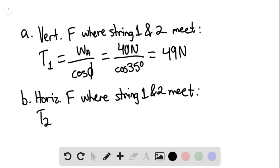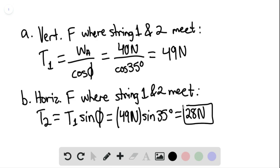T sub 2 is equaling T sub 1 times sine of phi. And this is equaling 49 newtons multiplied by sine of 35 degrees. And this is equaling 28 newtons. So this would be your answer for B.